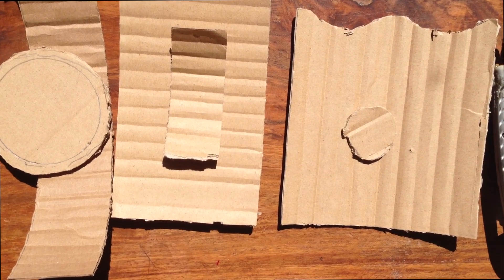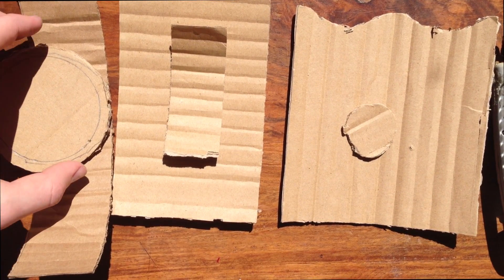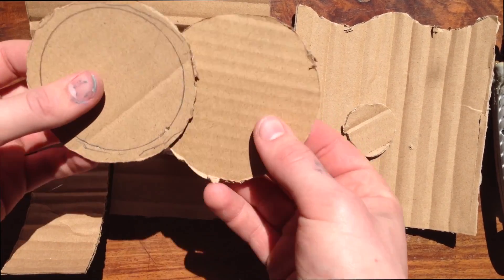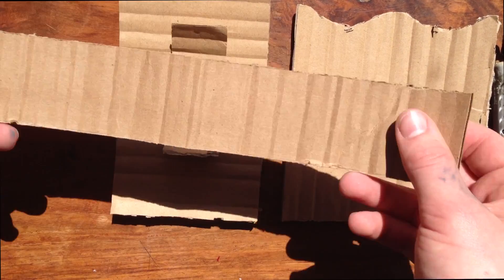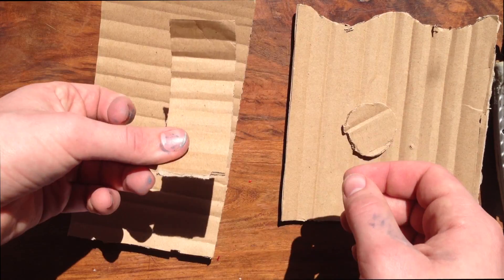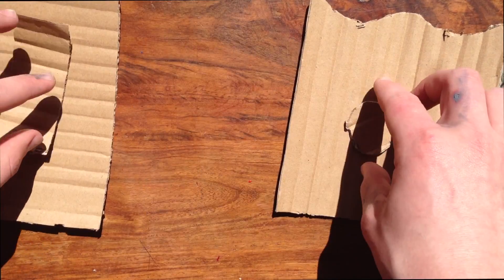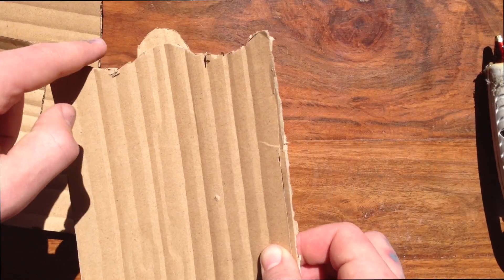First step is to download the file in the description. Trace the pictures onto some cardboard, and then cut it out. You should have seven pieces total: two round pieces, one long skinny piece, one big rectangle, one small rectangle, one small circle, and one piece with two grooves at the top.